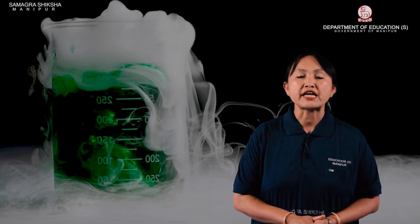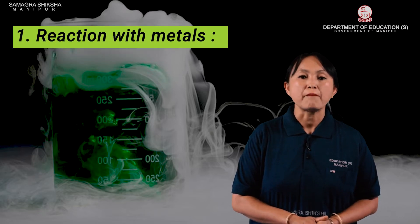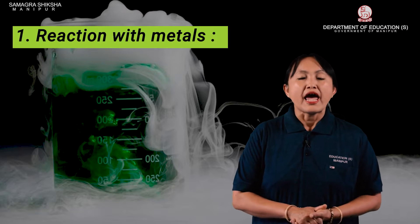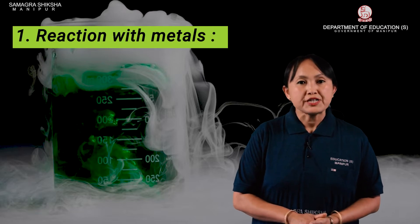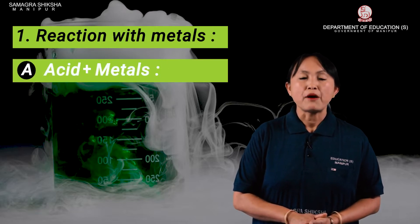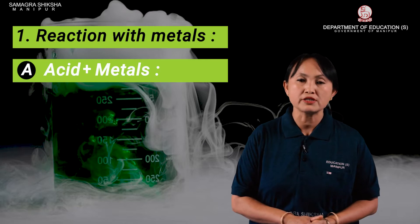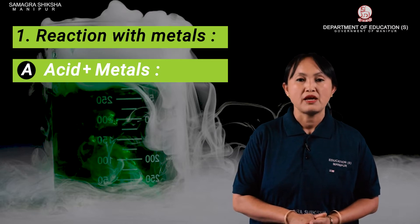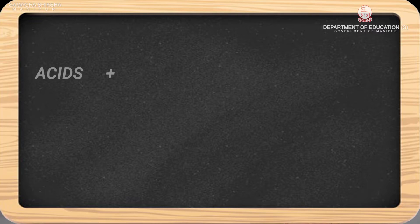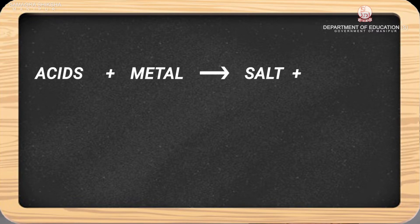The first chemical property is the reaction of acid with metals. Acid-base substances react in a chemical reaction to produce hydrogen gas. An acid reacts with a metal to form a salt along with hydrogen gas.